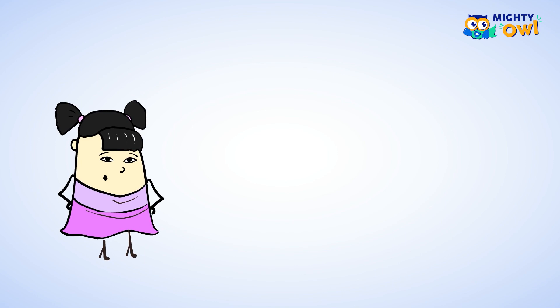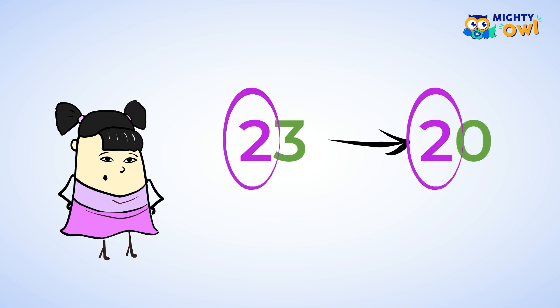So what about the number 23? 23 has a three in the ones place, and this means that we should round down to 20. Remember, the tens place, the two, does not change.